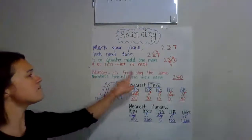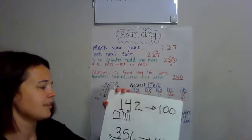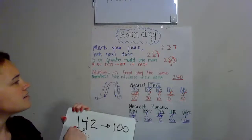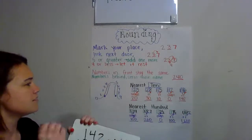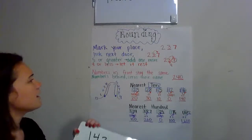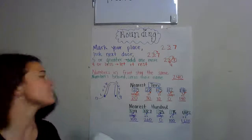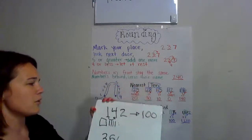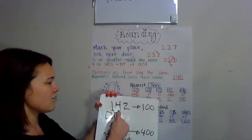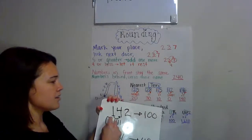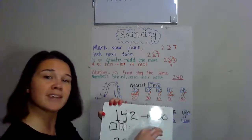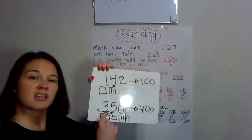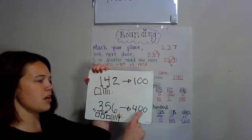Numbers in front stay the same. So my number in front is the one. Numbers behind, zero is their name. So I have 142 — I have one, and then anything behind that is going to be zero, zero. This number will change, and anything behind it will be zero, zero.